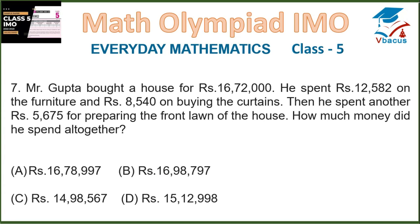Question 7. Everyday Mathematics. Mr. Gupta bought a house for Rs. 16,72,000. He spent Rs. 12,582 on furniture and Rs. 8,540 on curtains. Then he spent another Rs. 5,675 for preparing the front lawn of the house. Altogether means we have to add them. If we add all the money spent, we get Rs. 16,98,797. Option B is correct.